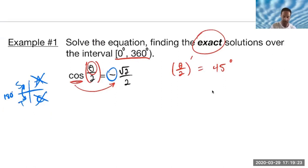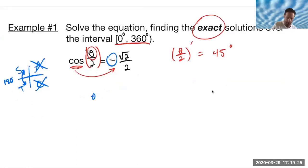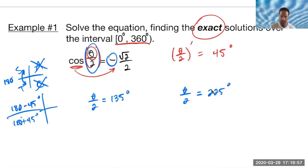For this, I know my angle that we're dealing with, which happens to be θ/2, would be equal to 180 minus 45 for quadrant 2 and then 180 plus 45 for quadrant 3. That would give us two different values for θ/2, which would be 135 degrees for quadrant 2 and 225 degrees for quadrant 3.